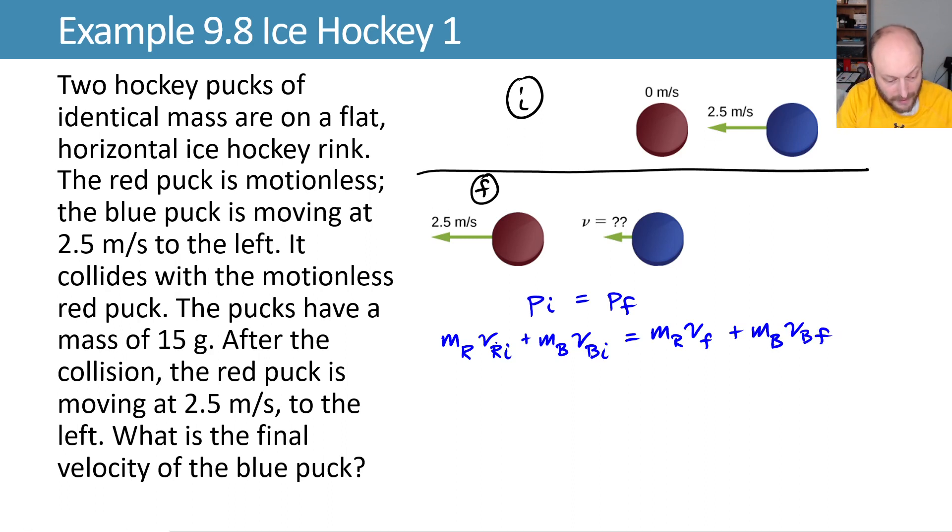We can say that the velocity of the red puck initially is zero because it starts at rest, and we want to solve for our final velocity of the blue puck.